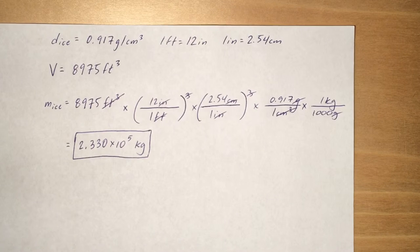Same thing with the next conversion factor. 2.54 centimeters divided by 1 inch, because you want to get those inches cubed out of there. You're going to cube that 2.54 centimeters. And now you have centimeters cubed.